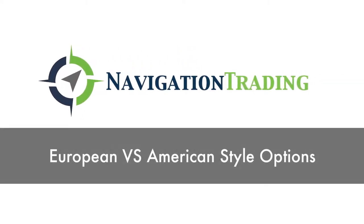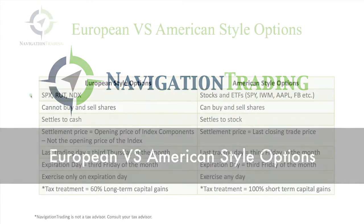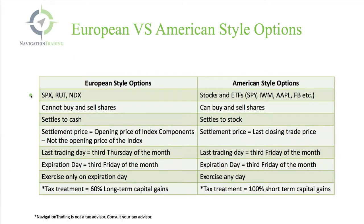Welcome. In this video, I want to review the difference between European and American style options. With European style options, a few examples are the S&P 500 index, the Russell 2000 index, and the NASDAQ. These are the three most liquid that we trade at Navigation Trading.